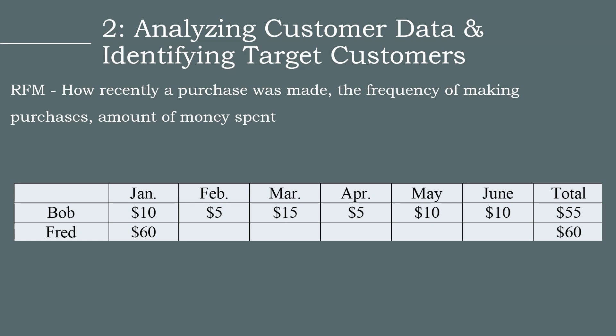So which customer is more profitable? At first glance, you might think that Fred is more profitable because he spent more money overall. However, when we apply RFM analysis, we can see that Bob is the more profitable customer. Because he makes purchases more frequently than Fred and spends money every month, while Fred only made purchases once in the six-month period and spent nothing in the remaining months.